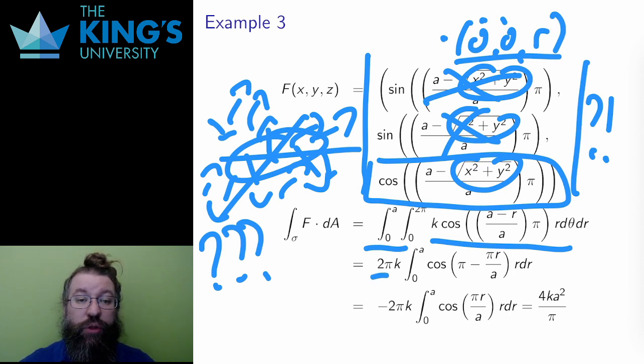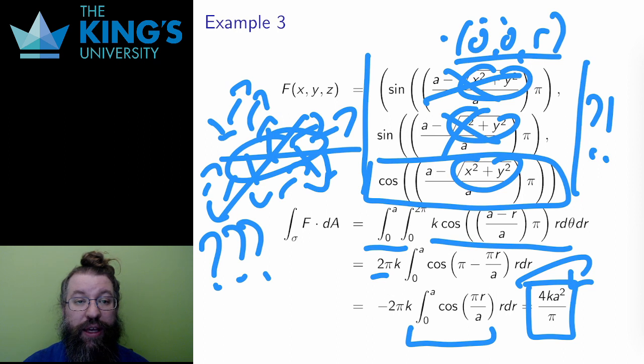Again, there is no theta in the integral, so the double integral is separable and the theta part gives 2π. The r integral is this integral of cos of (π - πr/a) times r. I ask the computer for the antiderivative and evaluate it on the bounds, and the result is 4ka² over π.